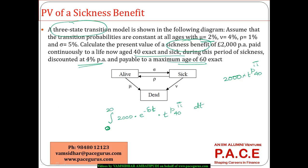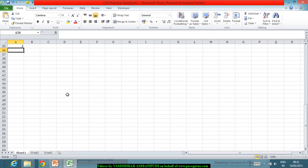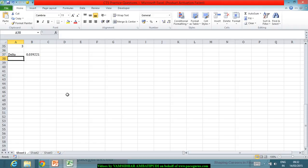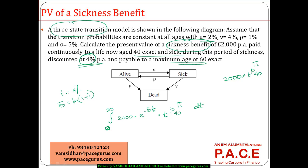The delta is computed from i equals 4 percent. We know that delta, the force of interest, equals log(1 plus i). So delta equals log(1.04), which works out to approximately 0.039.